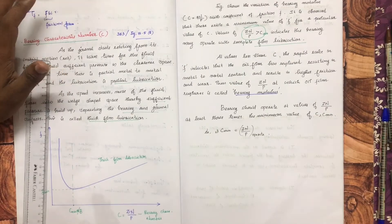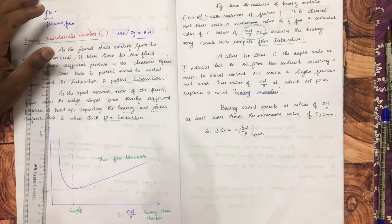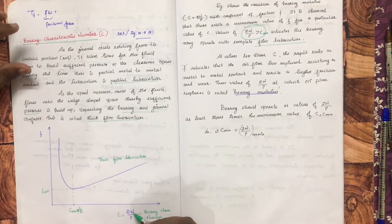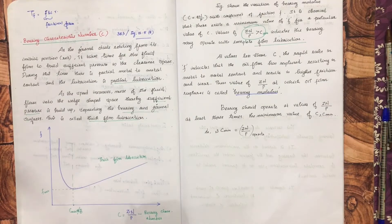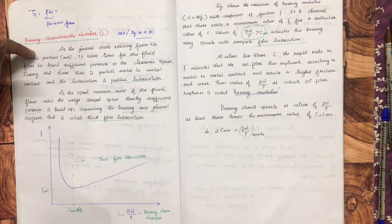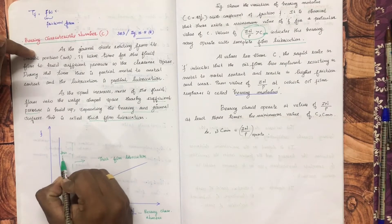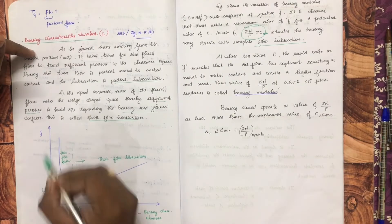Here, Z is the dynamic viscosity of the oil, N is the rpm, and P is the pressure. As Zn/P decreases toward thin film conditions, the oil film begins to thin.